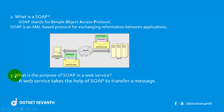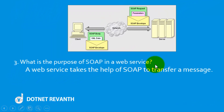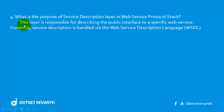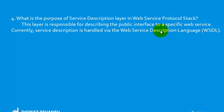Third question: what is the purpose of SOAP in a web service? SOAP uses open standard XML-based applications for communication of data. SOAP is used for transferring data. SOAP serves the service description layer in a web service protocol stack. This layer is responsible for describing the public interface to a specific web service. Currently, WSDL is handling the service description layer.